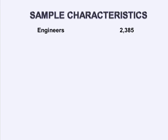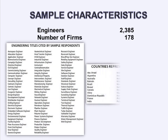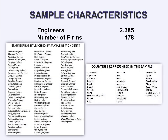We applied our revised model to a sample of 2,385 professional non-management engineers from 178 firms who cited 89 specialties in their titles. Most work in the United States, but 30 other countries are also represented. In all, this is a sample that probably can be trusted.